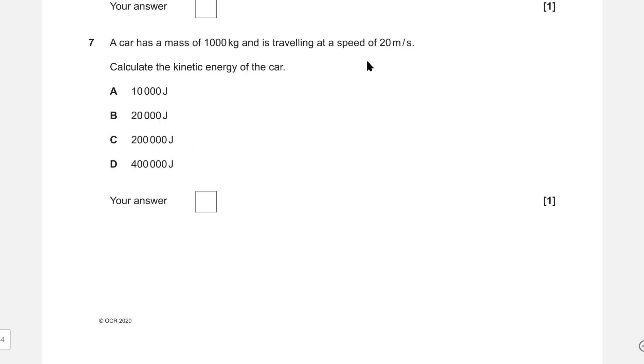Next one: we have a car with a mass of 1000 kilograms traveling at a speed of 20 meters per second. Calculate the kinetic energy of the car. Remember, kinetic energy equals one-half times the mass times the speed squared, where v is the speed.